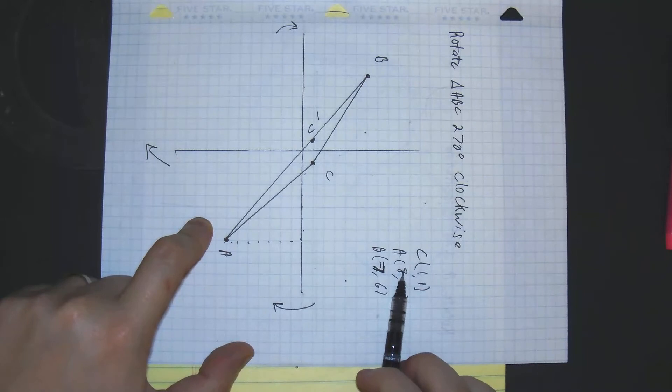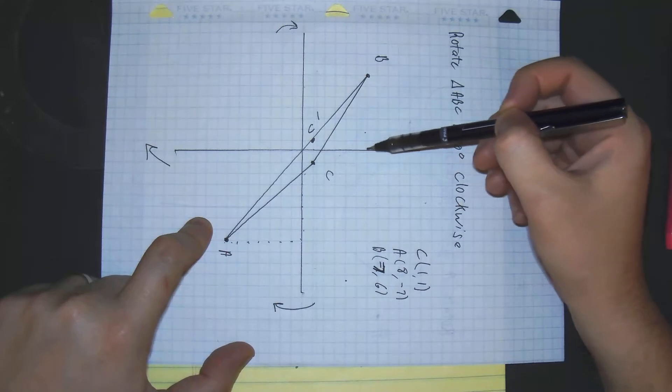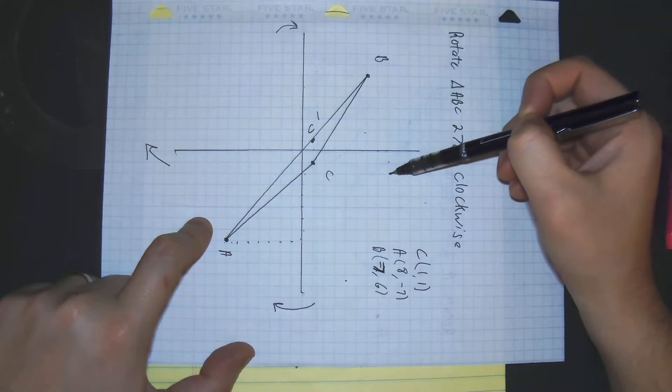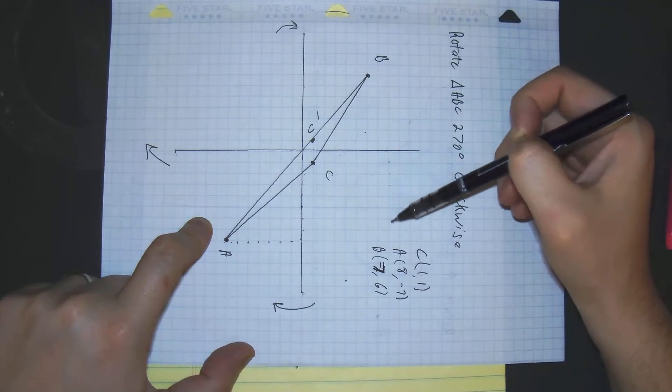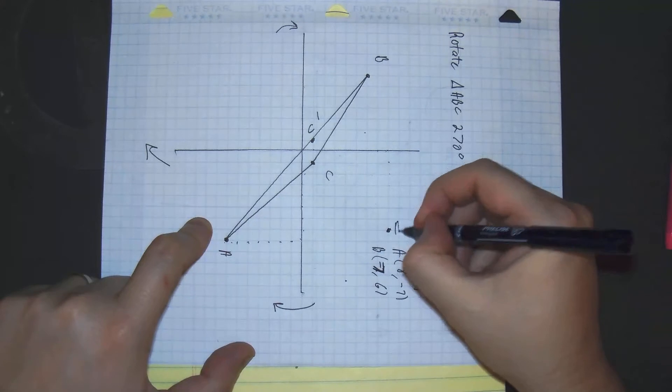Good. Now I want to graph A, which is at 8, negative 7. Counting: 1, 2, 3, 4, 5, 6, 7, 8. And 1, 2, 3, 4, 5, 6, 7. That's at A prime.